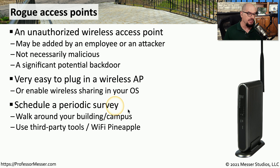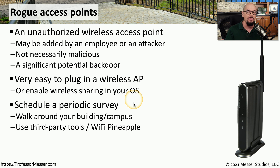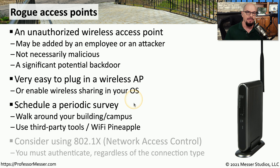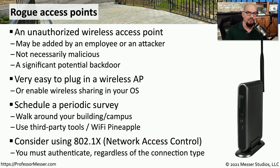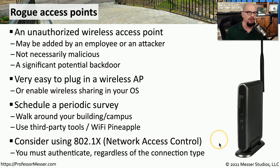In many organizations, the security team will perform periodic surveys that will examine the type of wireless communication in your area and see if anyone is communicating to an access point that they were not previously aware of. One way to prevent any type of rogue access point is to enable 802.1x, or network access control on your network. 802.1x requires that anyone connecting to the network authenticate properly before they are allowed access onto the rest of the network.